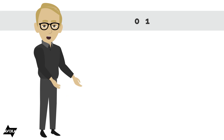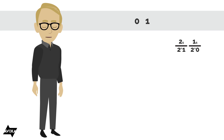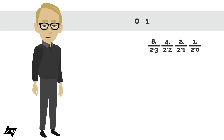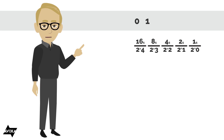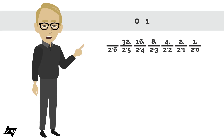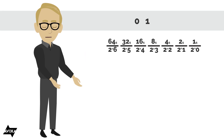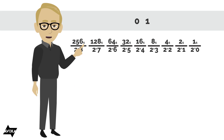Another way to look at these places is, again, we are multiplying by powers of the base. 2 to the power of 0 is 1, so that would be the 1's place. 2 to the power of 1 would be 2, so that's the 2's place. 2 to the power of 2 would be 4, so that'd be the 4's place. 2 to the power of 3 would be 8, and that's the 8's place. 2 to the power of 4 is 16, so that would be the 16's place. 2 to the power of 5 is 32, so that's the 32's place. 2 to the power of 6 is 64, that's the 64's place. 2 to the power of 7 is 128, so that's the 128's place. And 2 to the 8th is 256, so that's the 256's place.